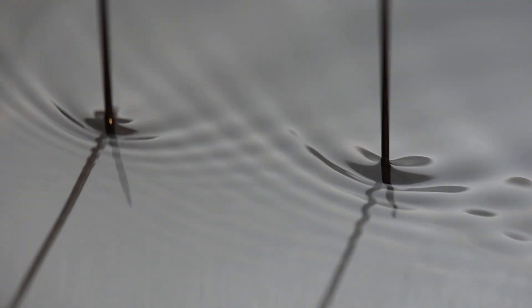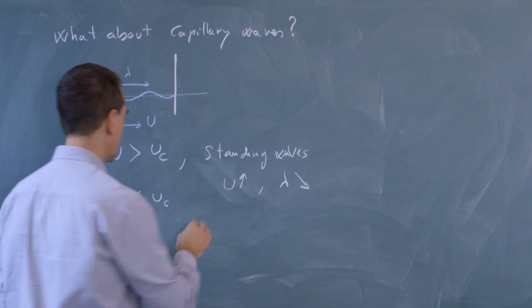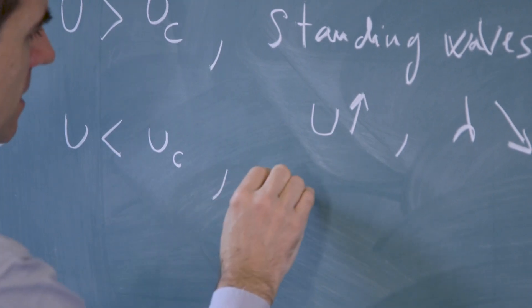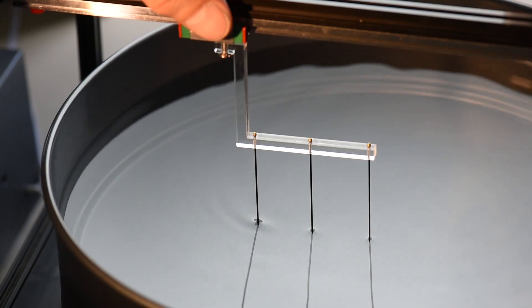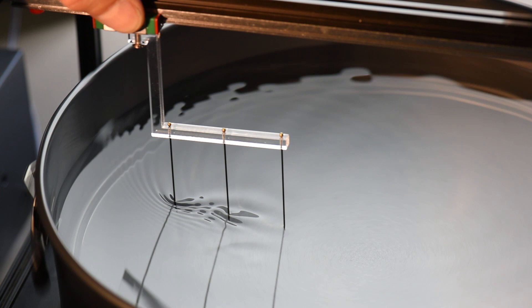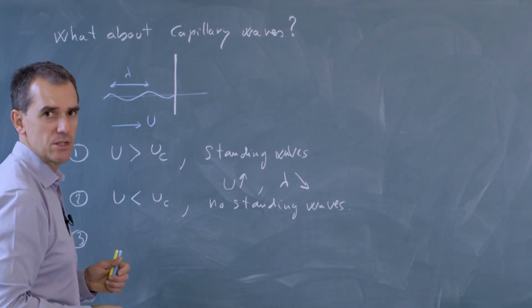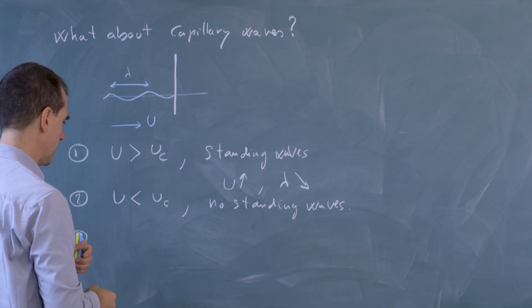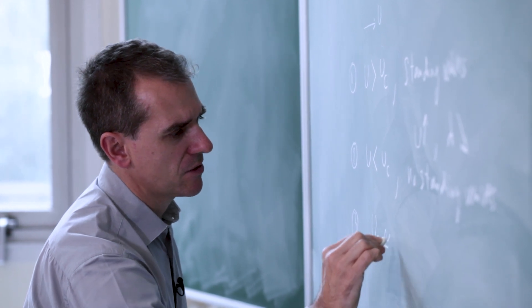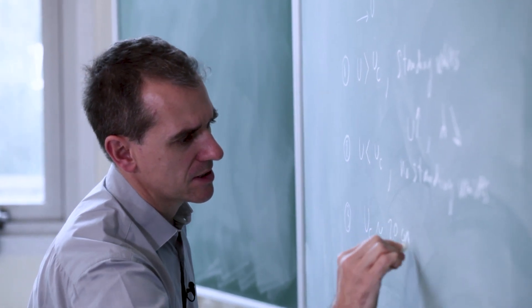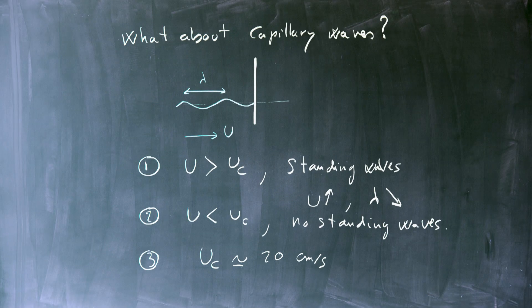The second thing is that below a critical velocity, which is closer to the center of the tank, we do not observe any standing waves. And the last thing is that when we look at the transition from no waves to waves, we can measure on the experiment that this critical velocity is of the order of 20 centimeters per second. So these are the three properties that I want to discuss with the model.